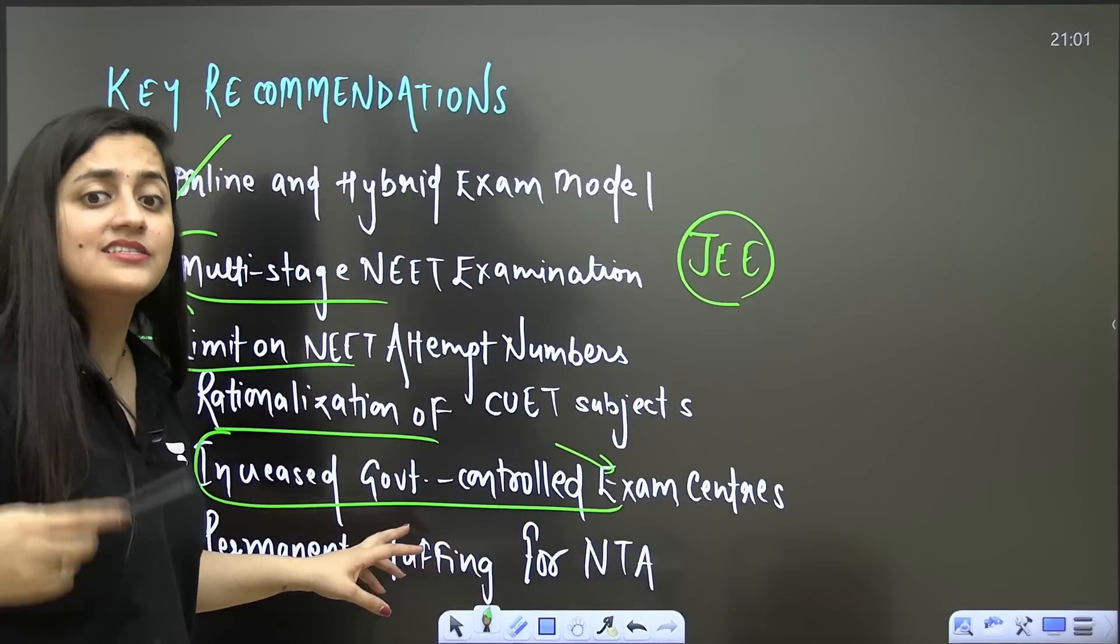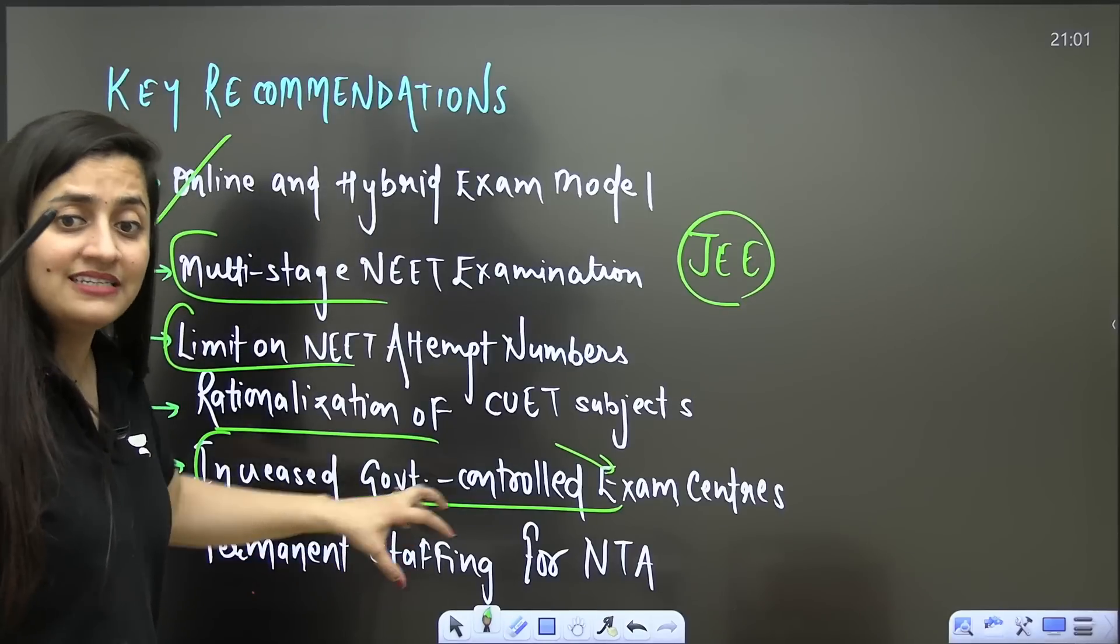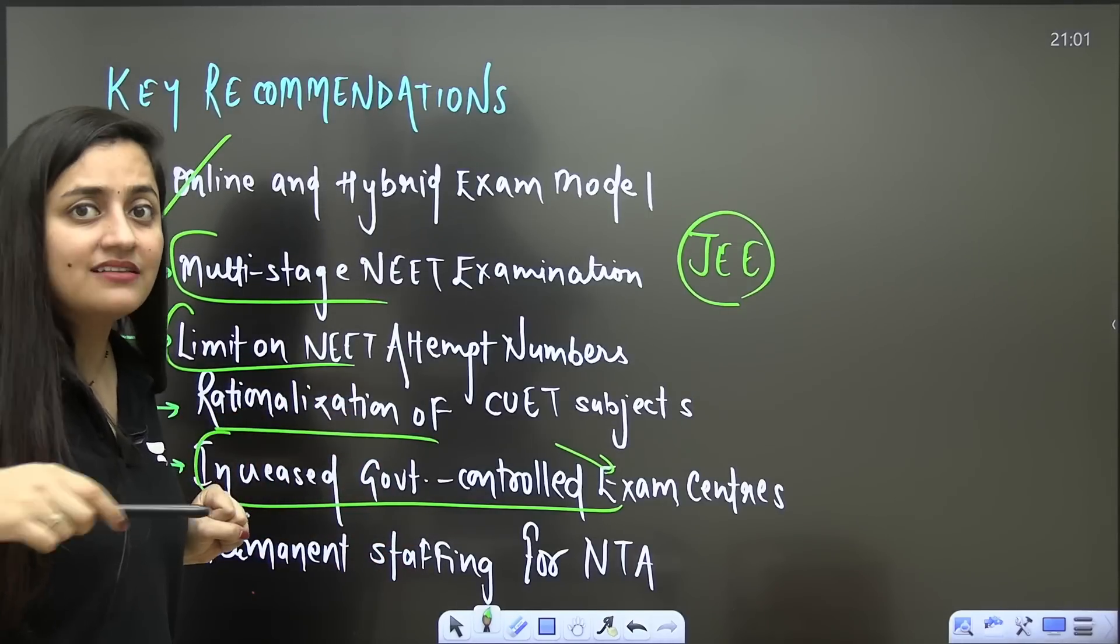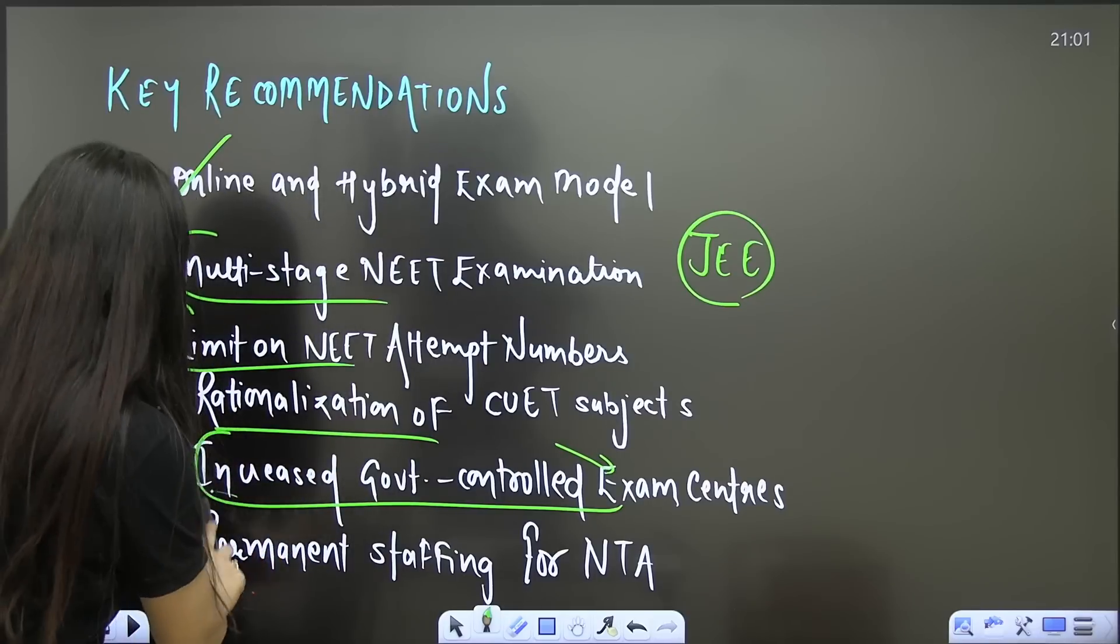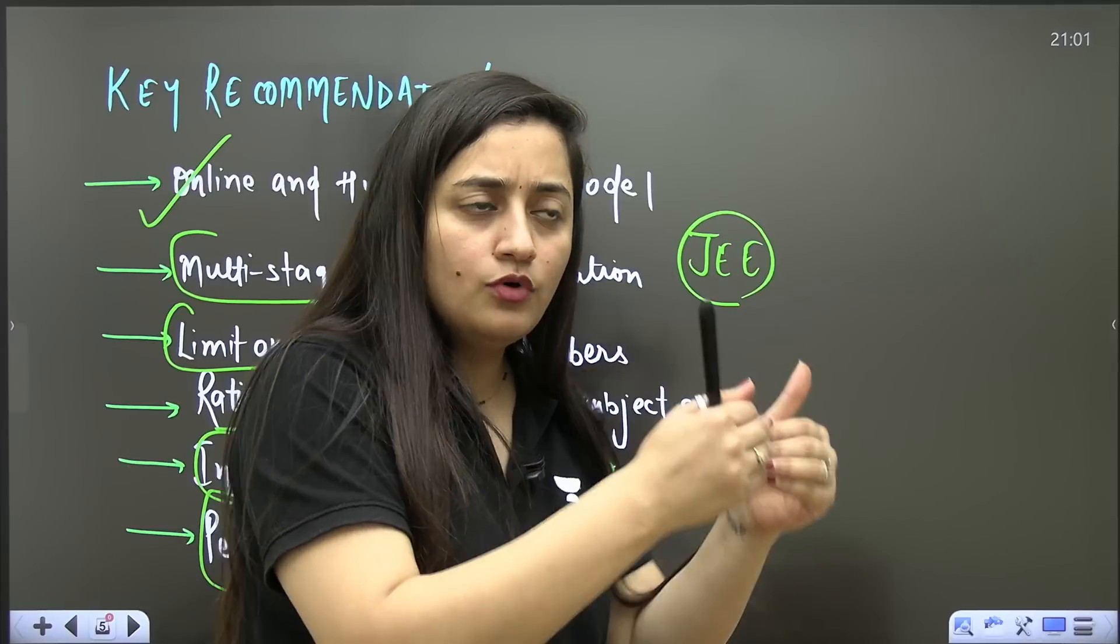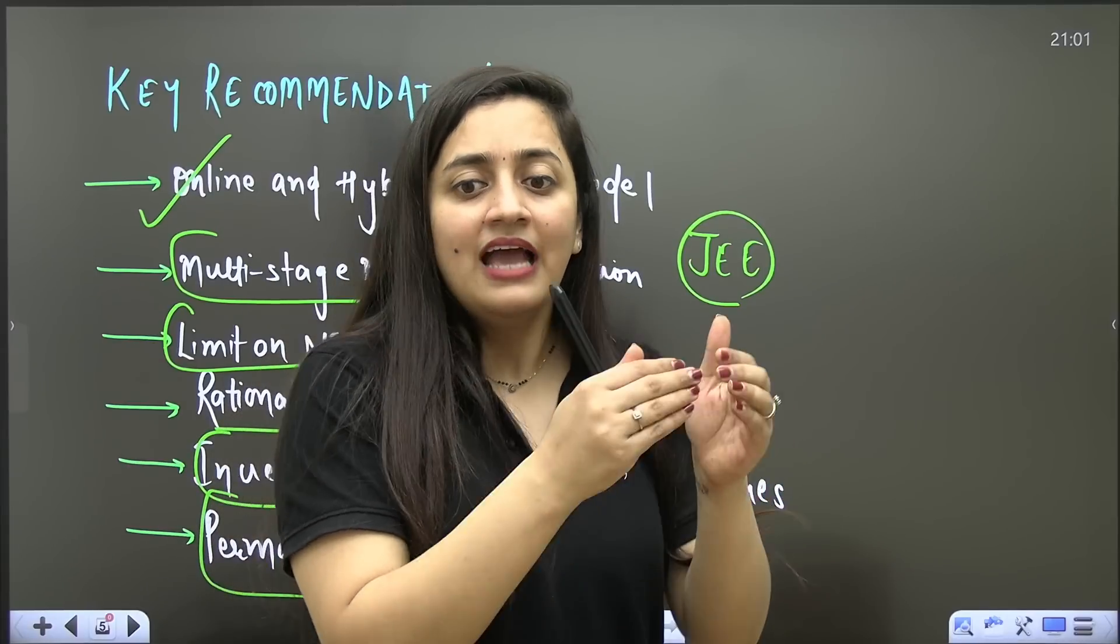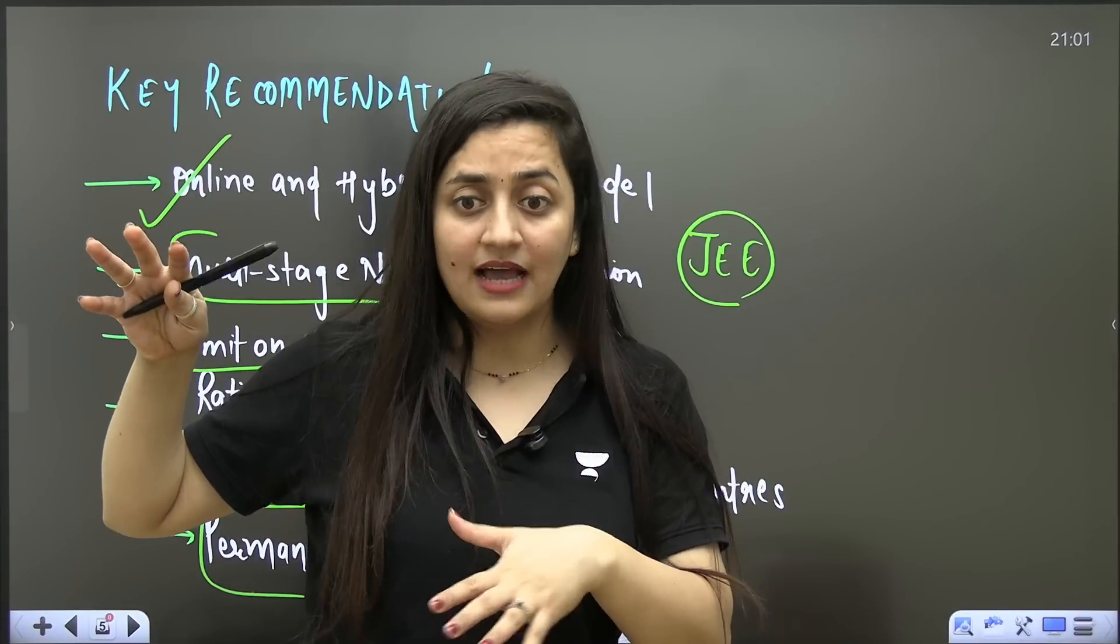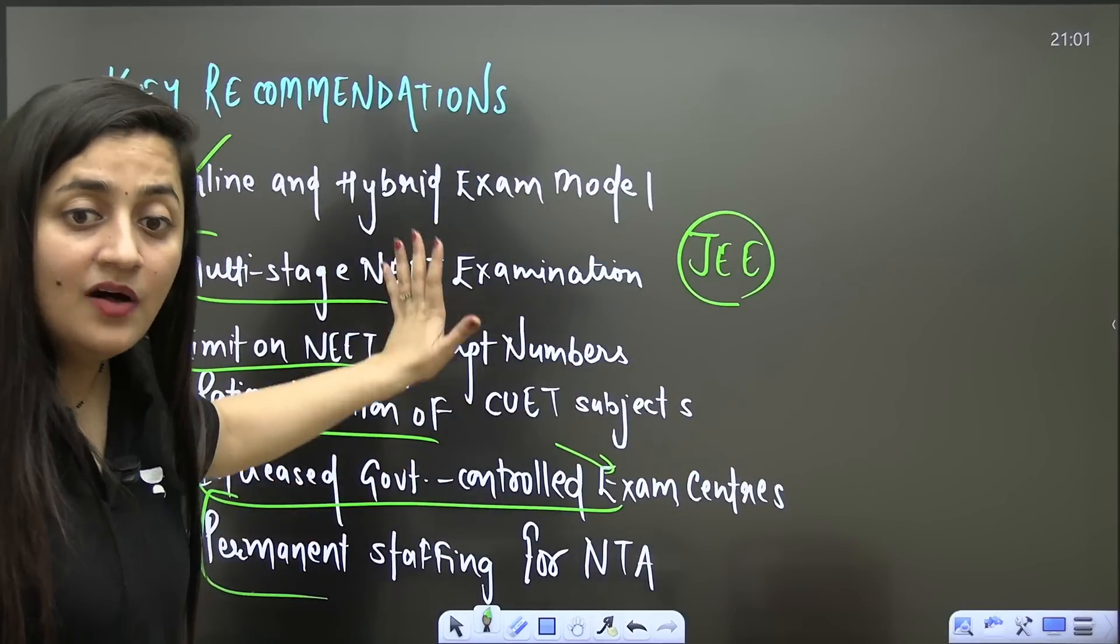To avoid that, government-controlled exam centers should be there. This is what they suggested: we should increase the number of centers and government should take it over. Government-controlled exam centers should be there rather than outsourcing the things. Permanent staffing for the NTA members will help. Those who are permanently there in the NTA and we are not outsourcing all these things related to the exam can avoid such kinds of scams.